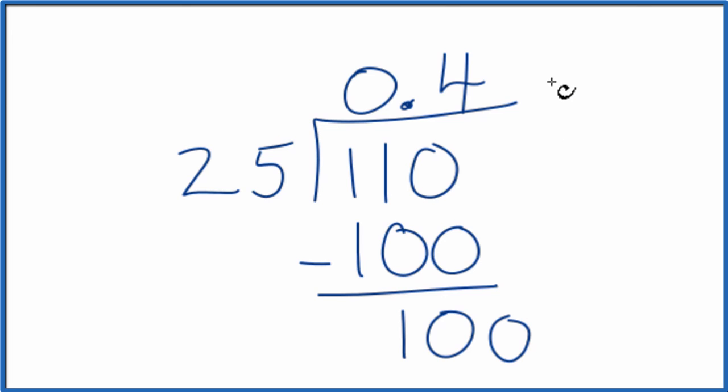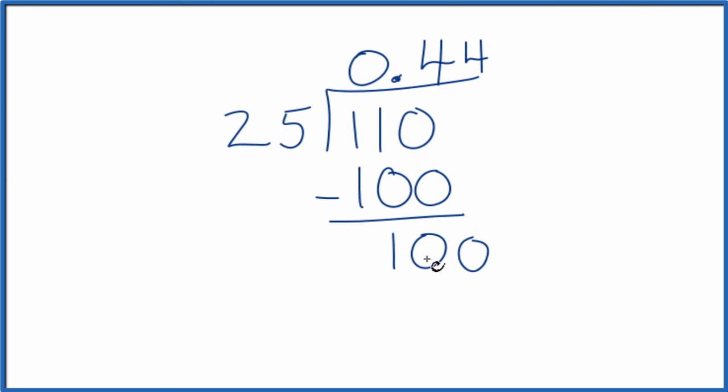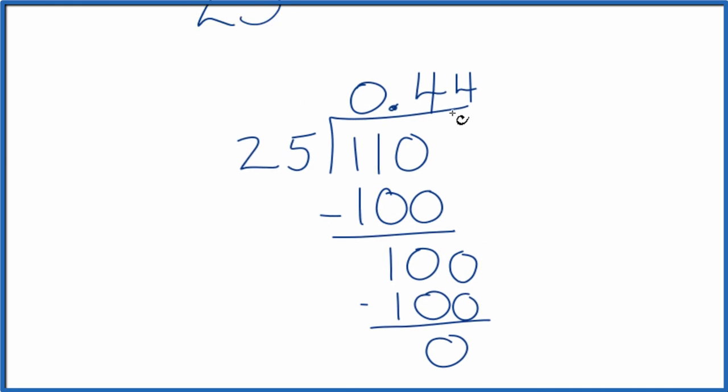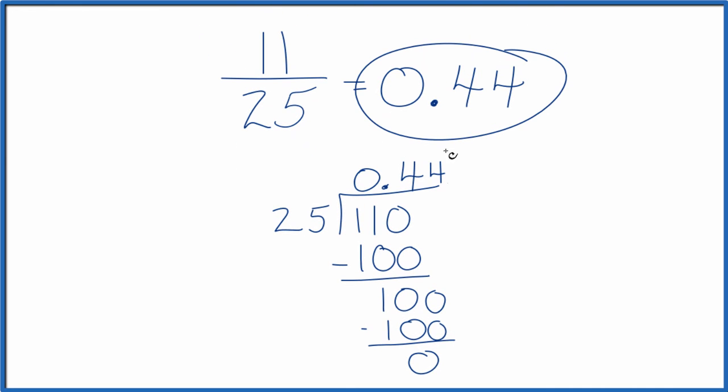Move over a decimal place here. So 4 times 25, that's 100. Subtract them, remainder 0. So 11 divided by 25, that's 0.44. That's what we found before on our calculator.